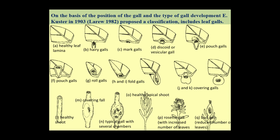On the basis of the position of the gall and the type of gall development, E. Custer in 1903 proposed a classification of plant galls. This classification includes the leaf galls only.